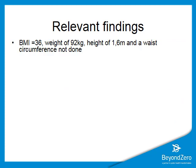The nurses noted that she has a weight of 92 kilograms with a BMI of 36, which classifies her as obese. Note that the waist circumference was not done, as it's not relevant in people who have a BMI over 30. In a patient with a BMI under 30, the waist circumference might add to the picture as well.